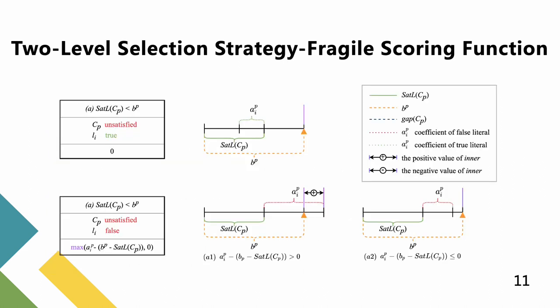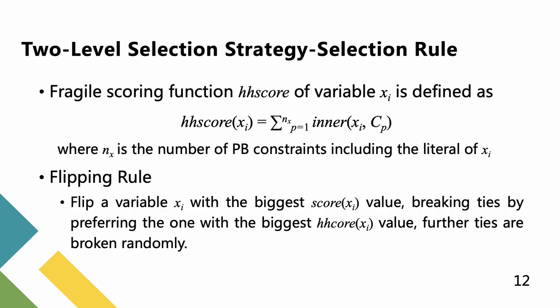To make the readers easily understand the above definition, we list all the situations corresponding to different inner values in a graphical explanation way. The full figure can be found in our paper. Considering all the PB constraints in which variable x's literal appears, the proposed fragile scoring function HHSC of variable x is defined as below.